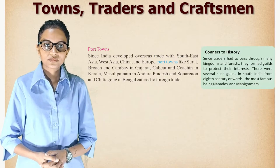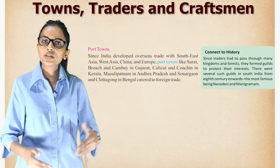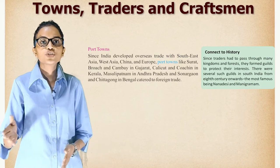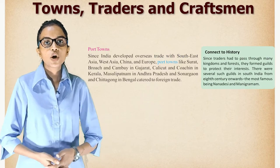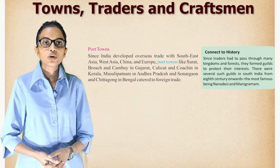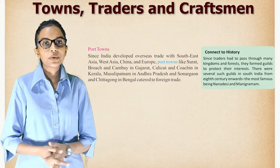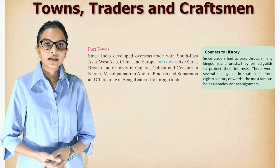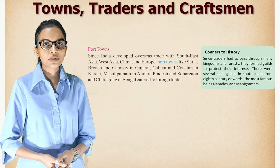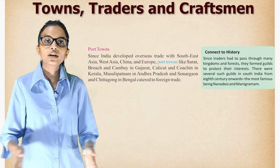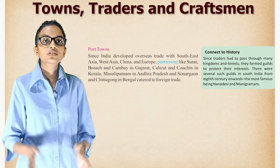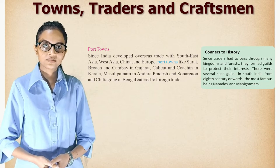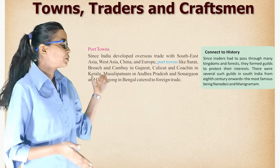Since India developed overseas trade with Southeast Asia, West Asia, China, and Europe, port towns like Surat, Broach, and Cambay in Gujarat, Calicut and Cochin in Kerala, Masulipatnam in Andhra Pradesh, and Sonargaon and Chittagong in Bengal catered to foreign trade.